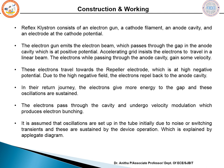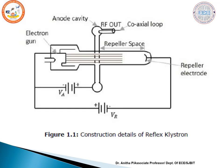Initially, oscillations are set up due to noise or switching transients, and these oscillations are then sustained by the device's operation. This process can be understood better by using an Applegate diagram. The constructional diagram shows the electron gun with filament on one side, the anode cavity in the middle maintained at positive potential, and the repeller electrode on the other side.